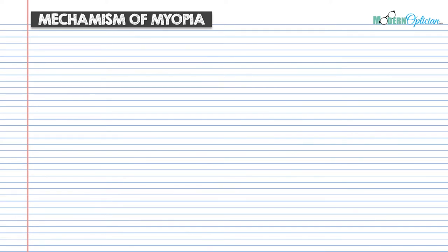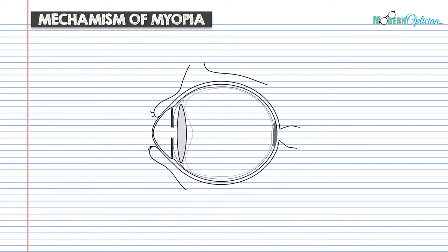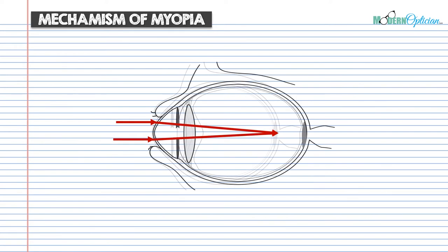Now it's time to look at the mechanism of myopia and see exactly where this phenomenon is coming from. In a normal eye, parallel rays of light get converged by the optics of the eye and fall directly on the retina — that's the emmetropic normal eye. However, in myopia the rays of light actually converge in front of the retina. In a lot of cases, if not most, myopia is actually due to an increased axial length of the eye. Even if the refractive components are normal — about 42 diopters of power from the cornea and about 20 diopters from the crystalline lens converging rays to about 23.5 millimeters — the converged light does not land on the retina because the eye is too long.